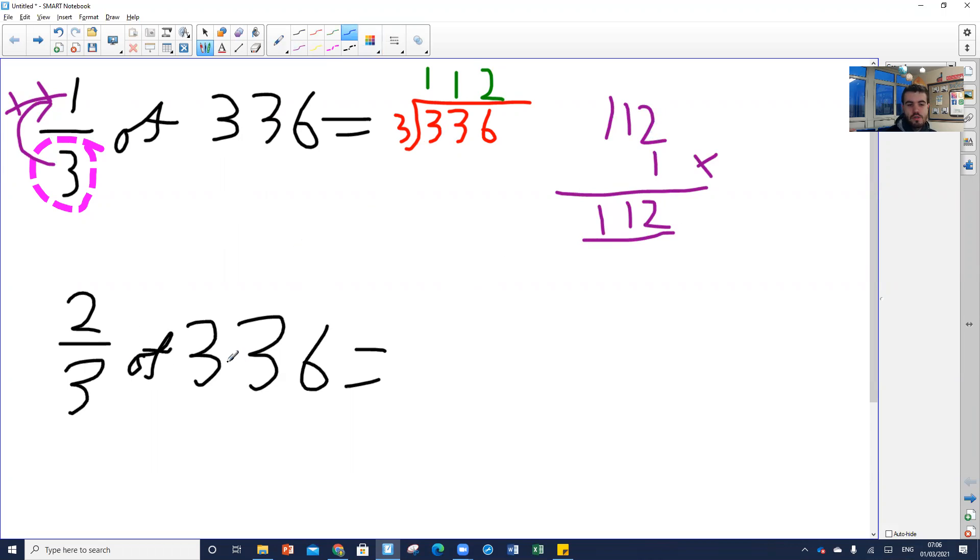The way to find two thirds of 336 is you do exactly the same process. So you do 336 divided by three. We know that's 112. We did that up here, didn't we? We've got that 112. And this time we're going to times it by the number at the top again. So we're going to take that answer and times it by the number that's up there. But this time, the number up there is 2. We're going to times that number by 2.